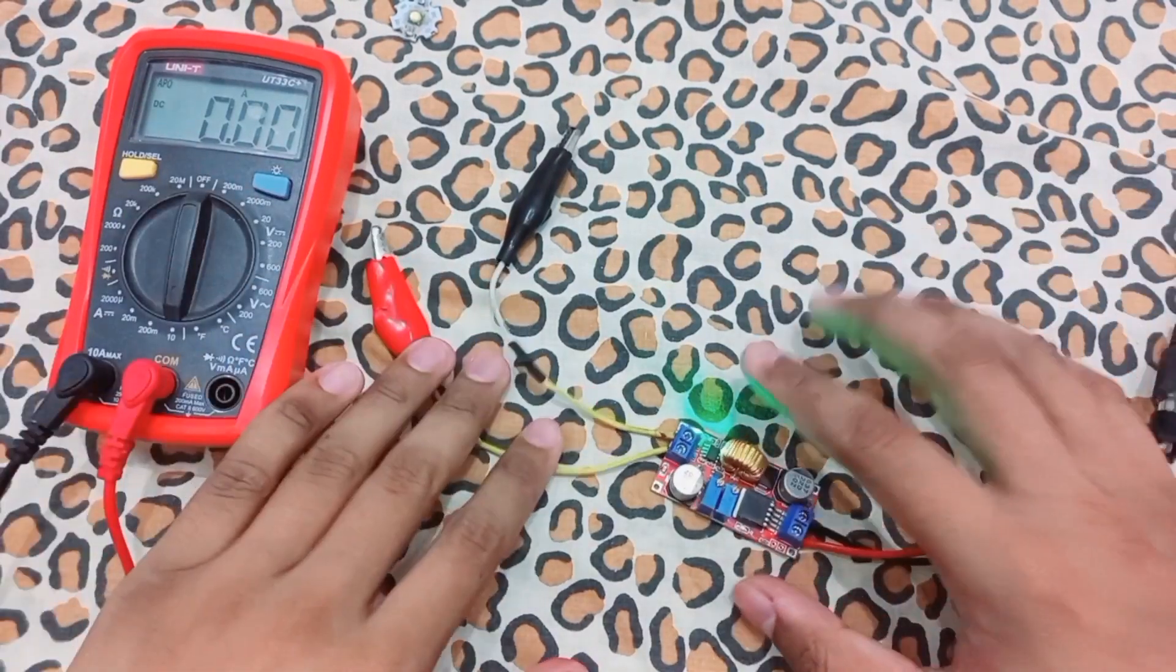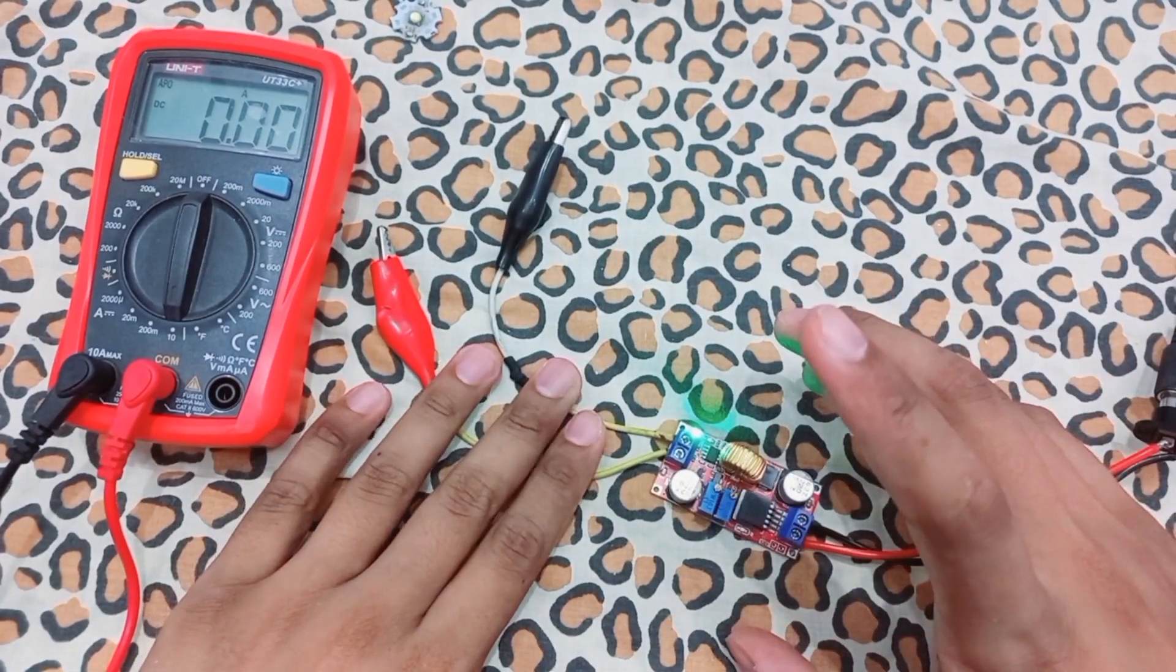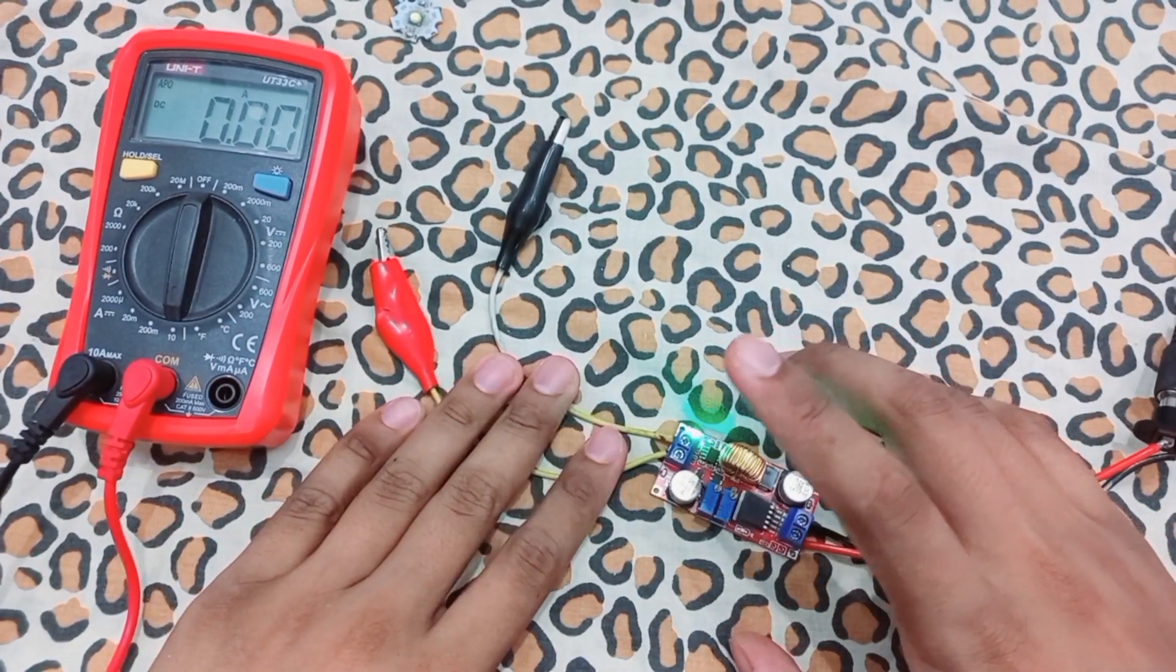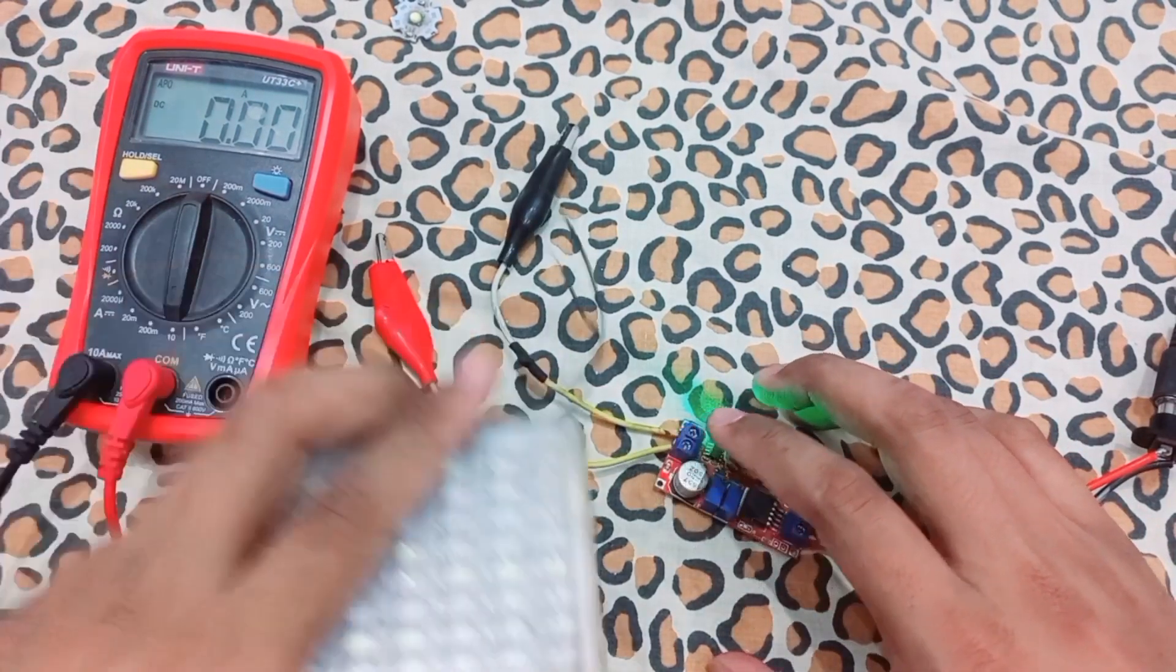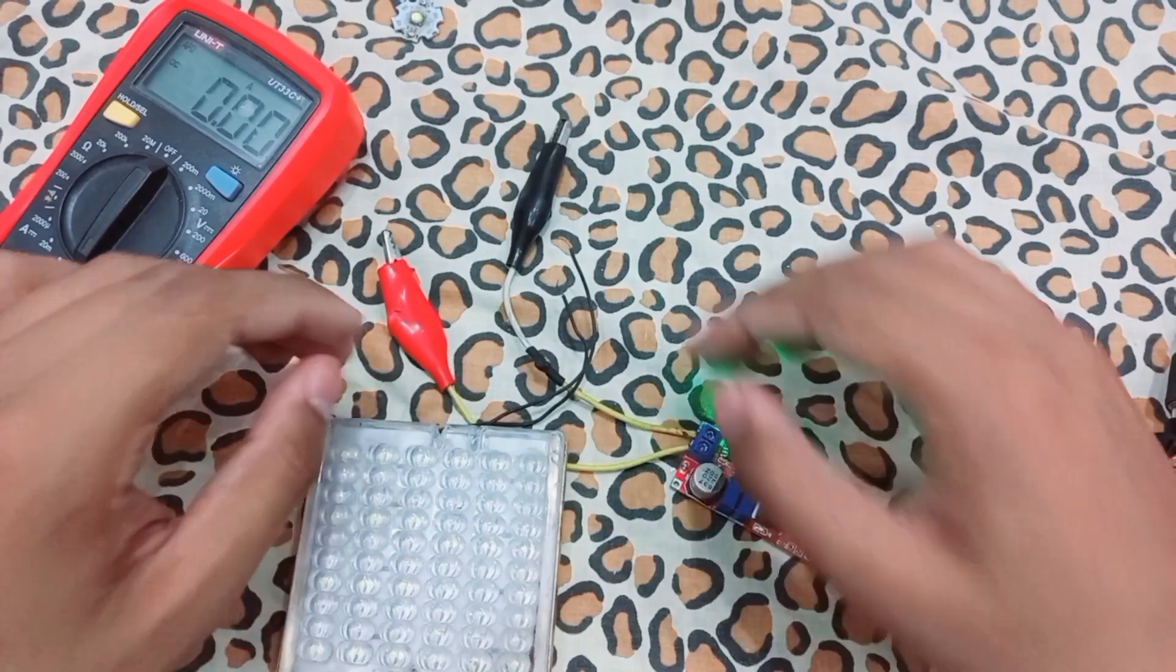I set the voltage to 11 volts and current to 1 ampere output max. I will test this LED strip now.